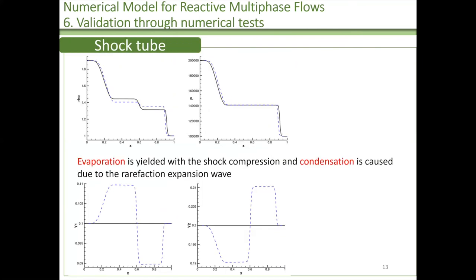The first test case is a shock-tube problem. The black line is the solution without phase transition. The blue line is the result with the phase transition. It can be seen that evaporation is yielded with the shock compression, and the compression is caused due to the refraction-expansion wave.